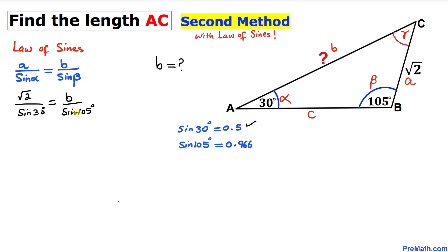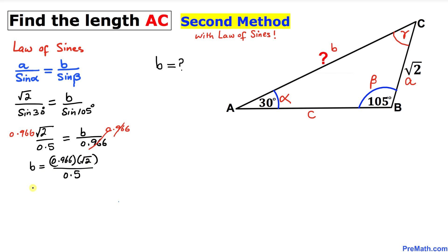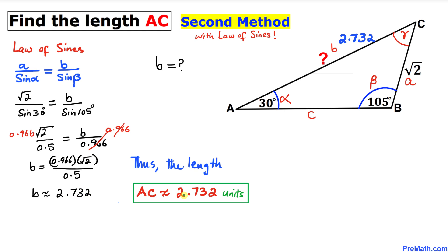We know sine of 30 degrees is 0.5 and sine of 105 degrees is 0.966. So we get square root of 2 divided by 0.5 equals b divided by 0.966. Multiplying both sides by 0.966, we get b equals 0.966 times square root of 2 divided by 0.5. Our value of b turns out to be approximately 2.732 units. So the side length AC is approximately equal to 2.732 units. That is our final answer.